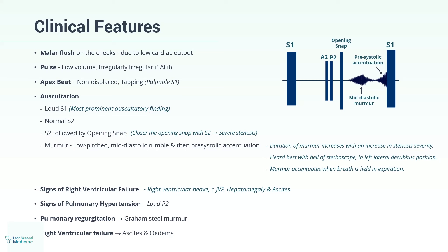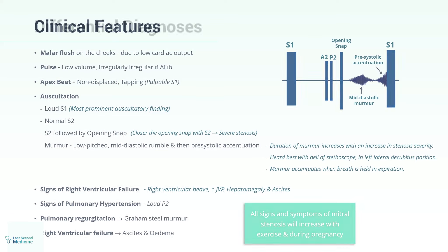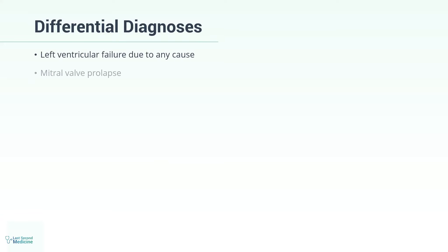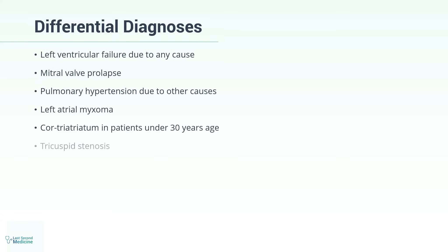All signs and symptoms of mitral stenosis will increase with exercise and during pregnancy. Differential diagnoses of mitral stenosis include left ventricular failure due to any cause, mitral valve prolapse, pulmonary hypertension due to other causes, left atrial myxoma, cor triatriatum in patients under 30, and tricuspid stenosis.